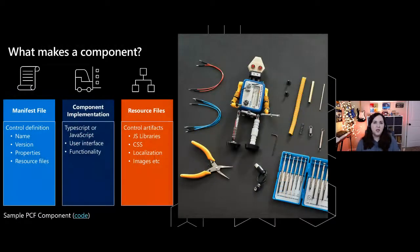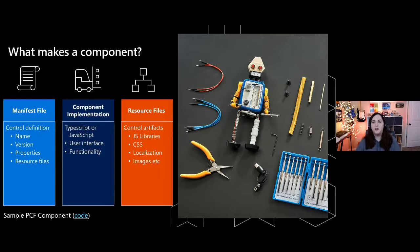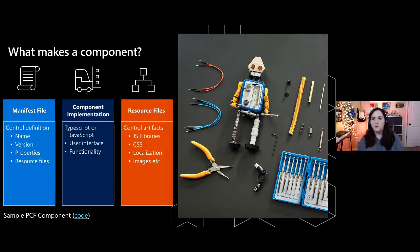The component framework works like an interface socket — you have an API SDK for controls that provides control lifecycle methods, data, metadata, and design. The control implements that interface and UI rendering logic. What makes up a component itself is: a manifest file with your control definitions; control implementation in TypeScript or JavaScript for your UI and functionality; and resource files — your artifacts like JavaScript libraries, CSS, and images.